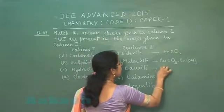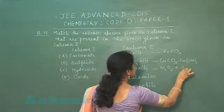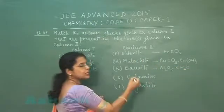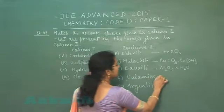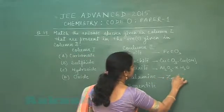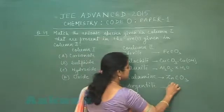This is bauxite - bauxite is written as Al2O3.XH2O, so oxide also converts to hydroxide. Calamine is zinc carbonate and argentite is Ag2S.